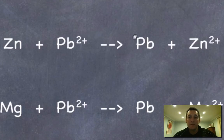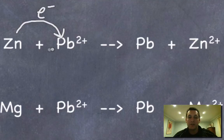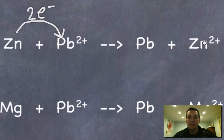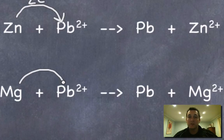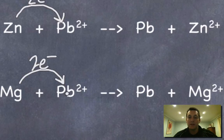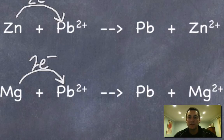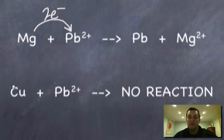Zinc reacted with lead: the new metal formed was lead. The lead ions in solution gained electrons from the zinc — they were reduced by the zinc — which in turn oxidized the zinc itself. Each zinc atom gave each lead ion two electrons, producing lead atoms and zinc ions. In the magnesium test tube, magnesium atoms were the reducing agent, giving electrons to the lead ions, which were reduced to lead atoms, while magnesium atoms were oxidized to magnesium ions.